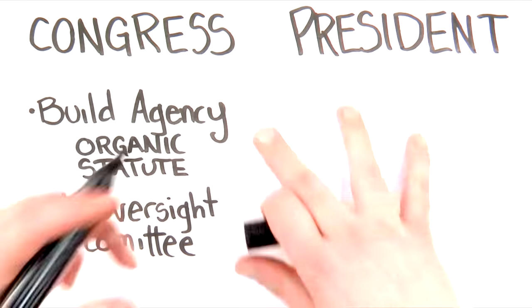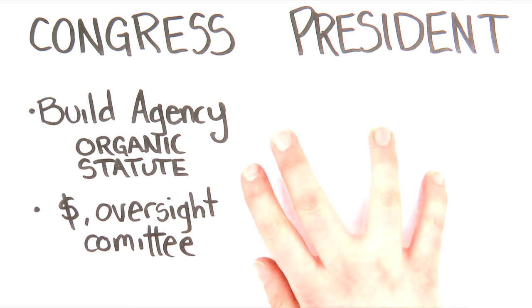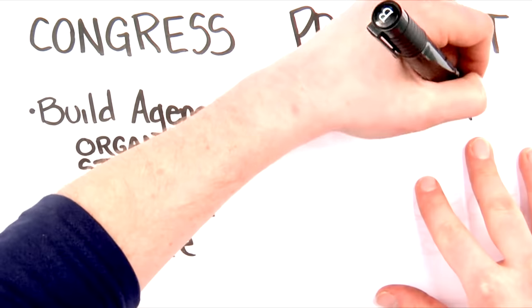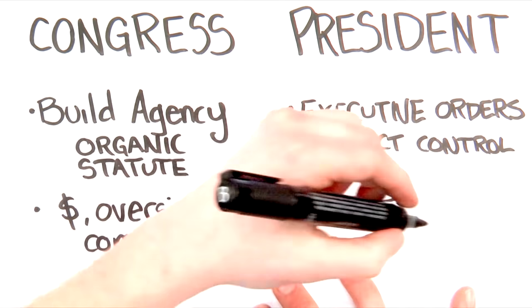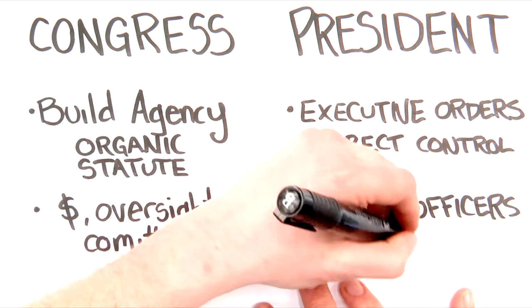Also, the president gets to put the pilot in the robot. They get to choose who's steering the agency. The president also gets to order the agencies around. These are called executive orders, and they're supposed to make sure that the agency is acting in accord with the will of the people.